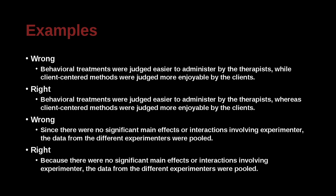'Since there were no significant main effects or interactions involving experimenter, the data from the different experimenters were pooled.' versus 'Because there were no significant main effects or interactions involving experimenter, the data from the different experimenters were pooled.' What's wrong with 'since'? 'Since' can mean 'because,' but it also means from time A until time B — for example, 'Since yesterday I have not been feeling well.' So if you use 'since,' it sounds like a time sequence, which is not what we mean. The word 'because' is much clearer in this context.